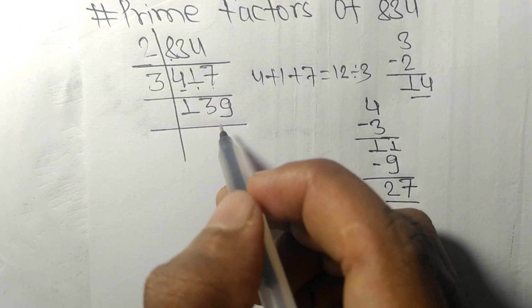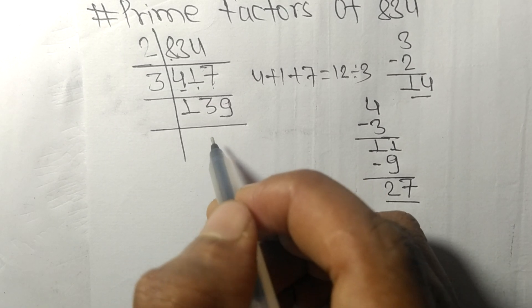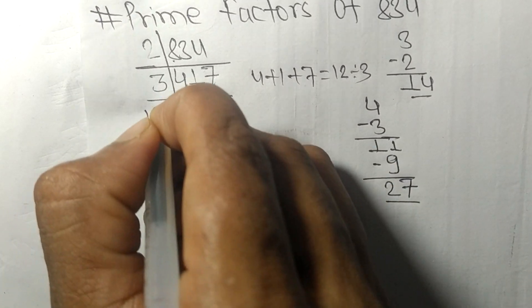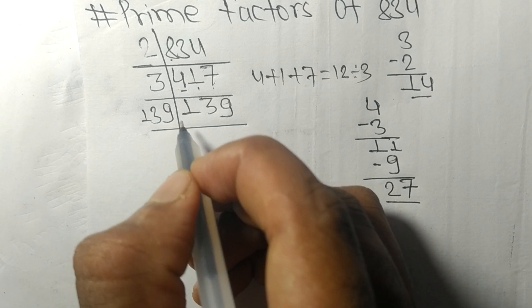So now we got 139, which is a prime number, so it is exactly divisible by 139 only. And on dividing we get 1.